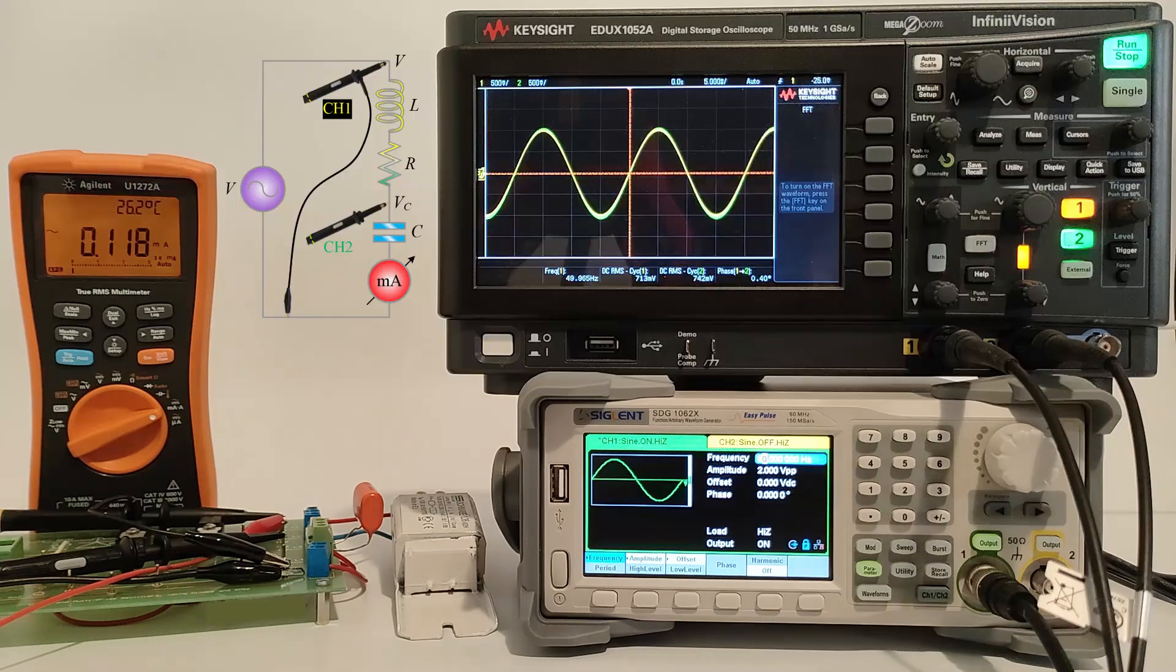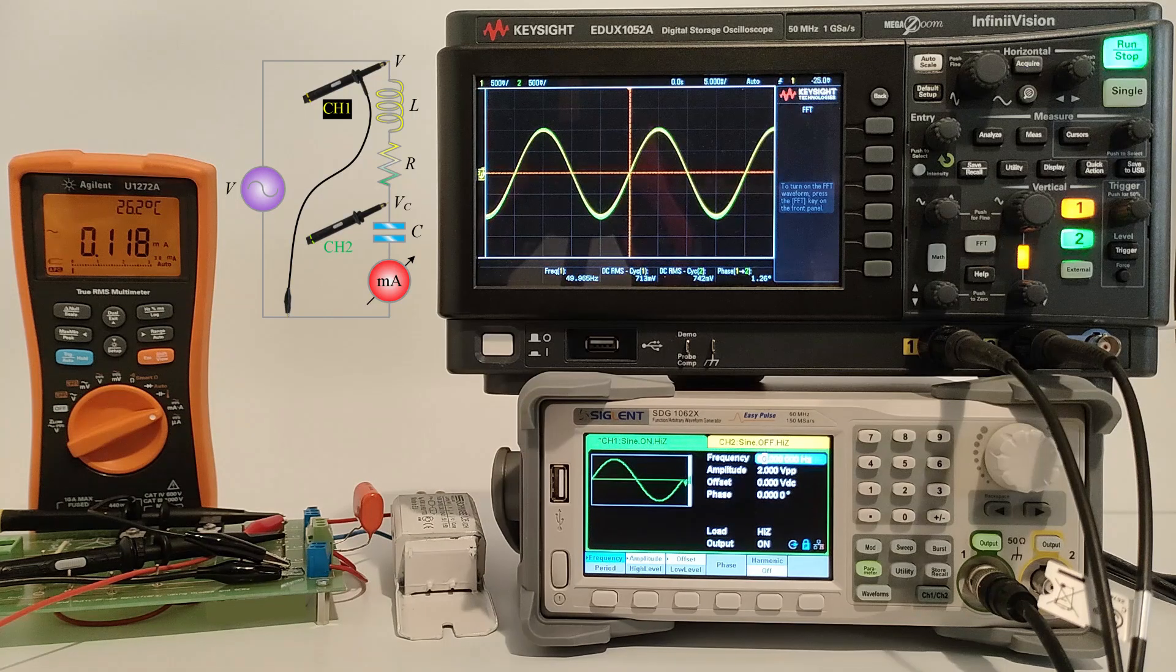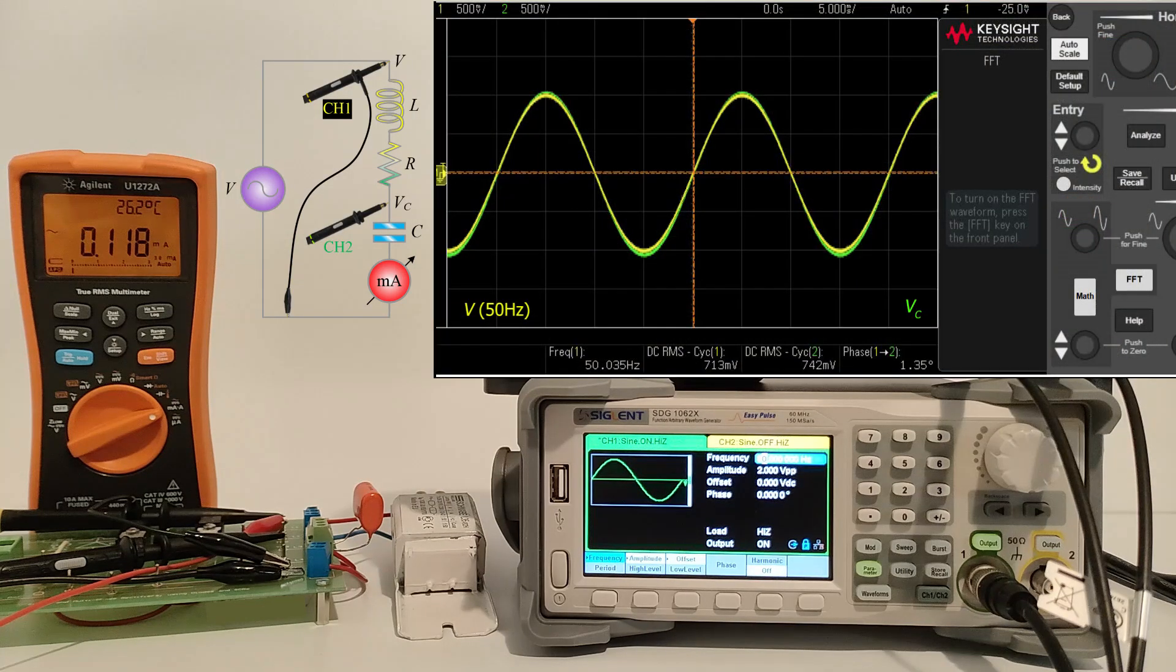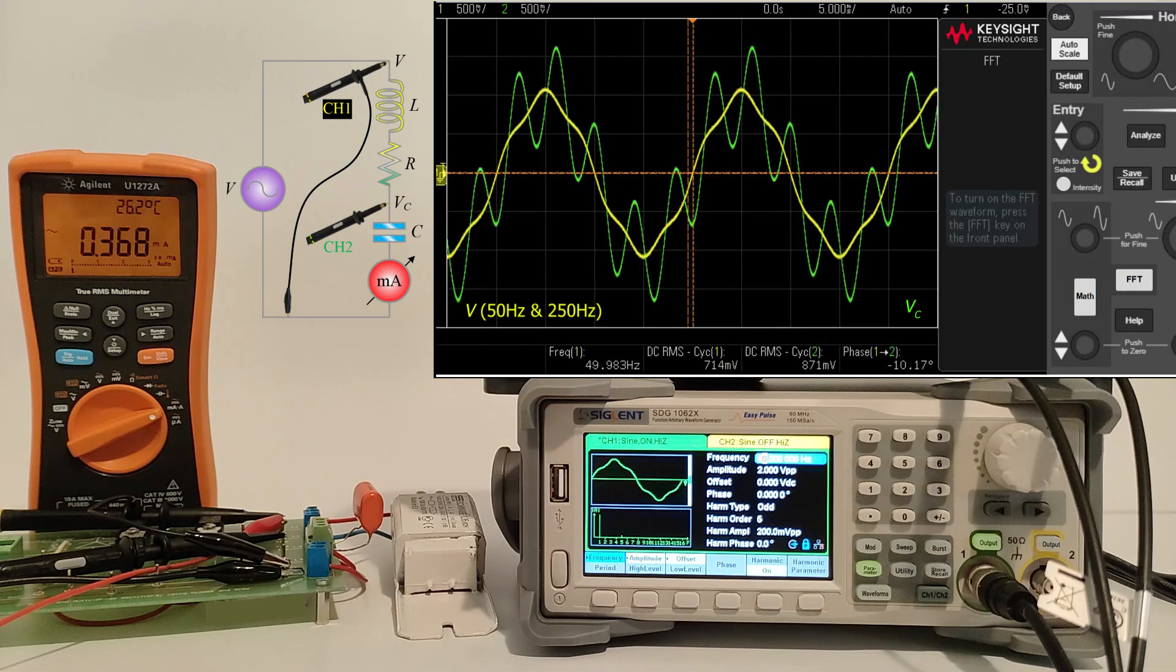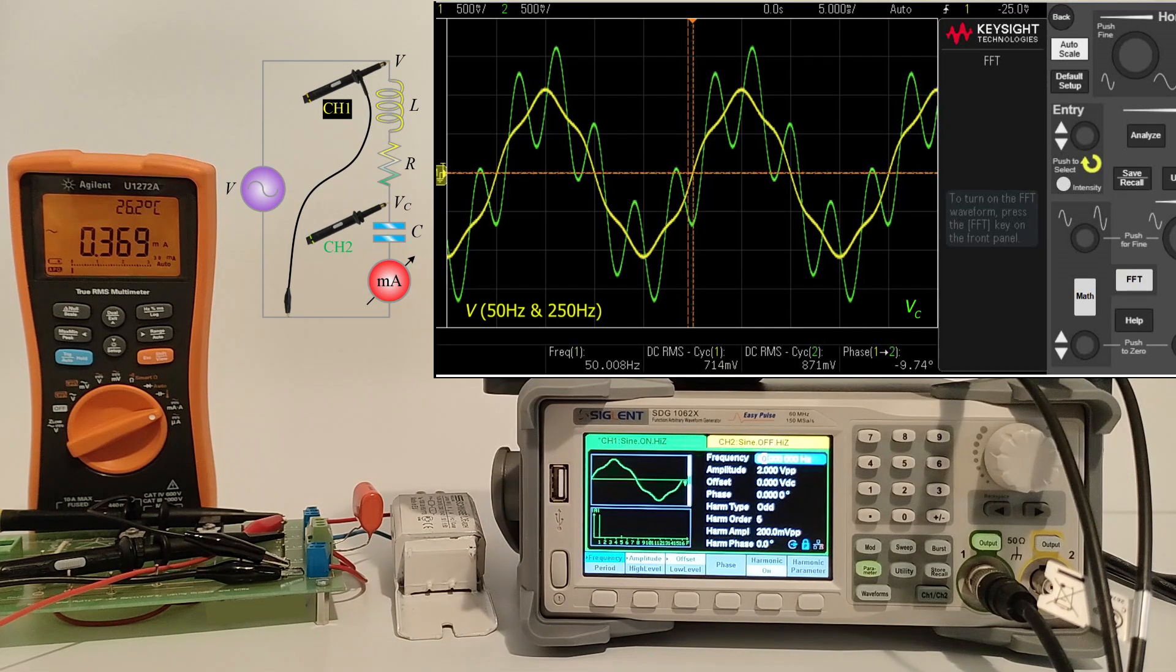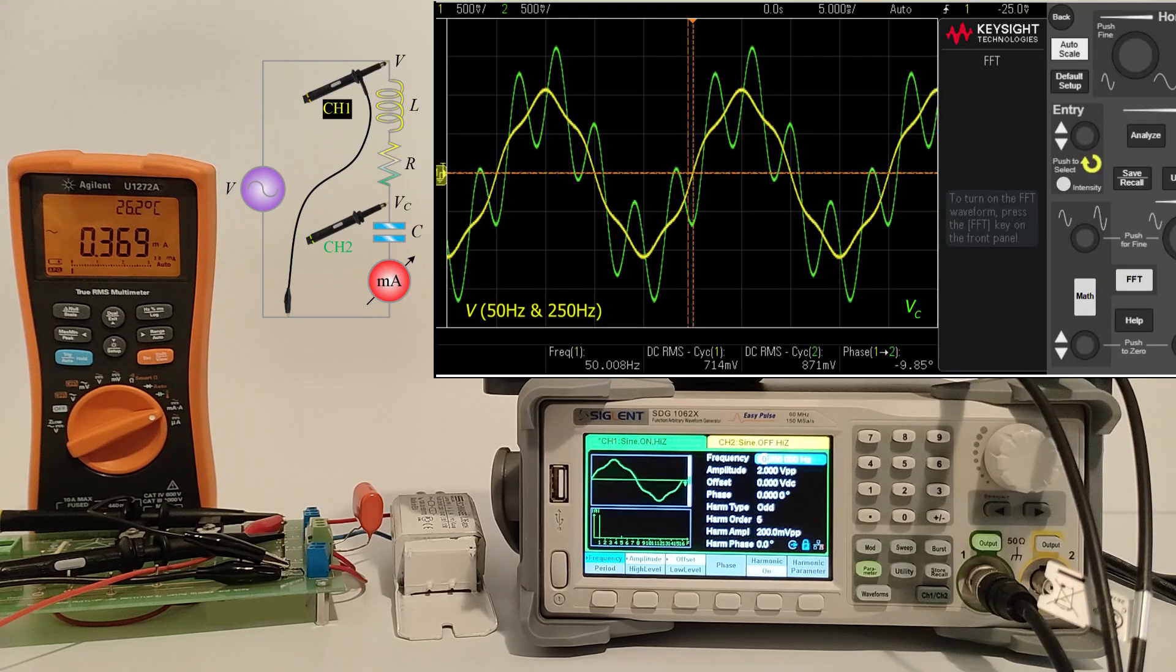Resonance is essential at telecommunication receivers but is undesirable on the grid. In particular, the distortion of the 50 hertz sinusoidal voltage, manifested by the small fifth harmonic at 250 hertz, causes due to the resonance in it the shown capacitor voltage.